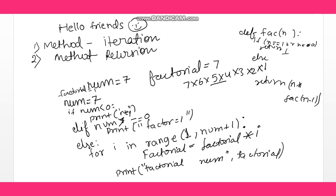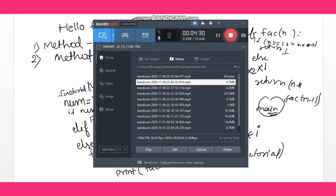For example, factorial(5) returns 5 * factorial(4), and so on. The recursive function calls itself — that is what recursion means. It keeps calling factorial(n - 1) until it reaches the base case and returns to the main function. I hope you understand — both methods are very easy. Thank you, I hope you liked it.